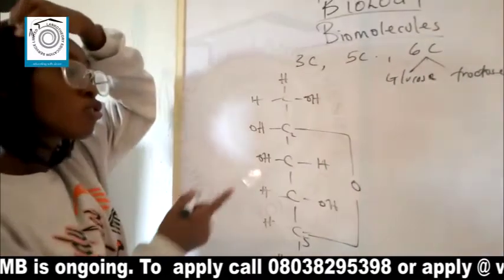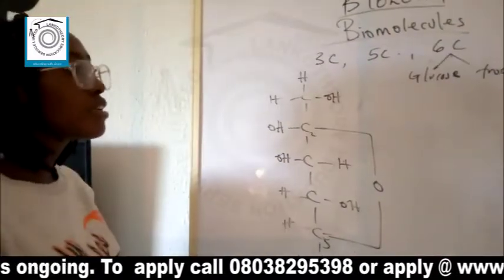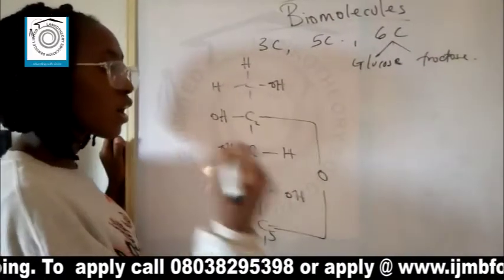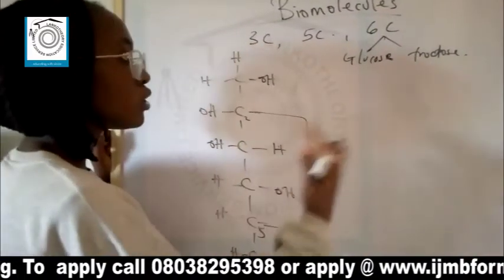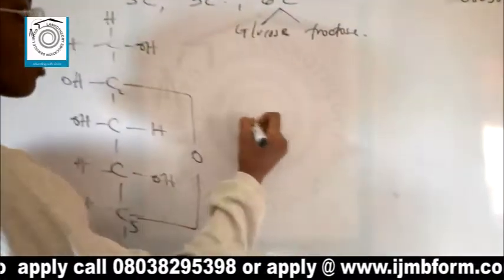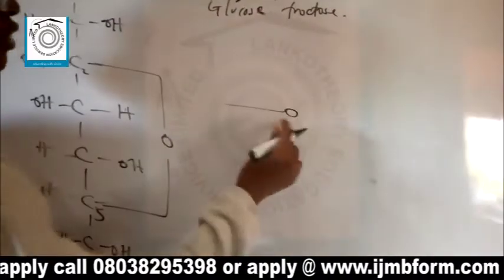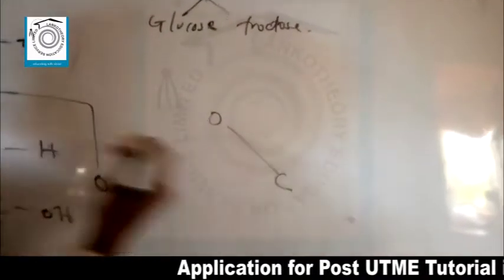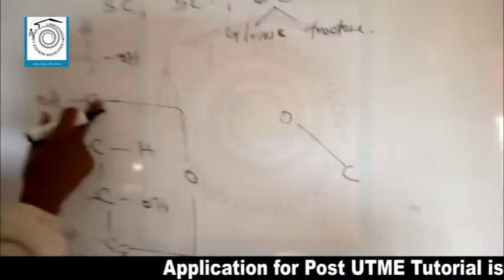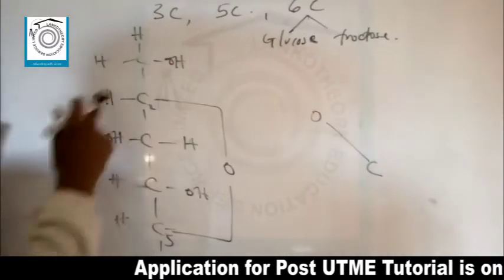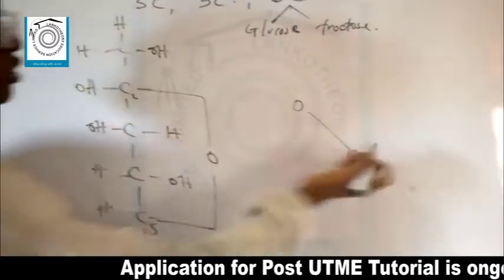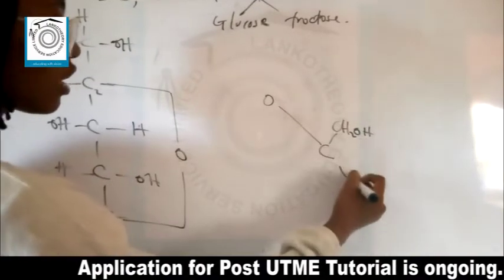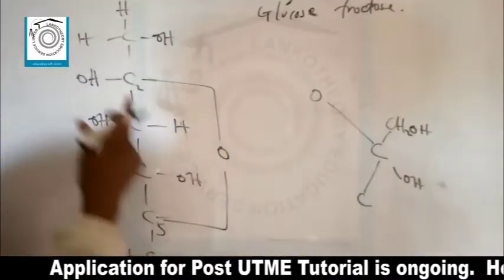The cyclic structure for fructose is a pentagon, similar to that of ribose sugar. This cyclic structure for fructose is actually known as furanose, because it bears resemblance to another organic compound with the same cyclic structure. In the ring, the oxygen is present, and the first carbon carries CH2OH and OH.